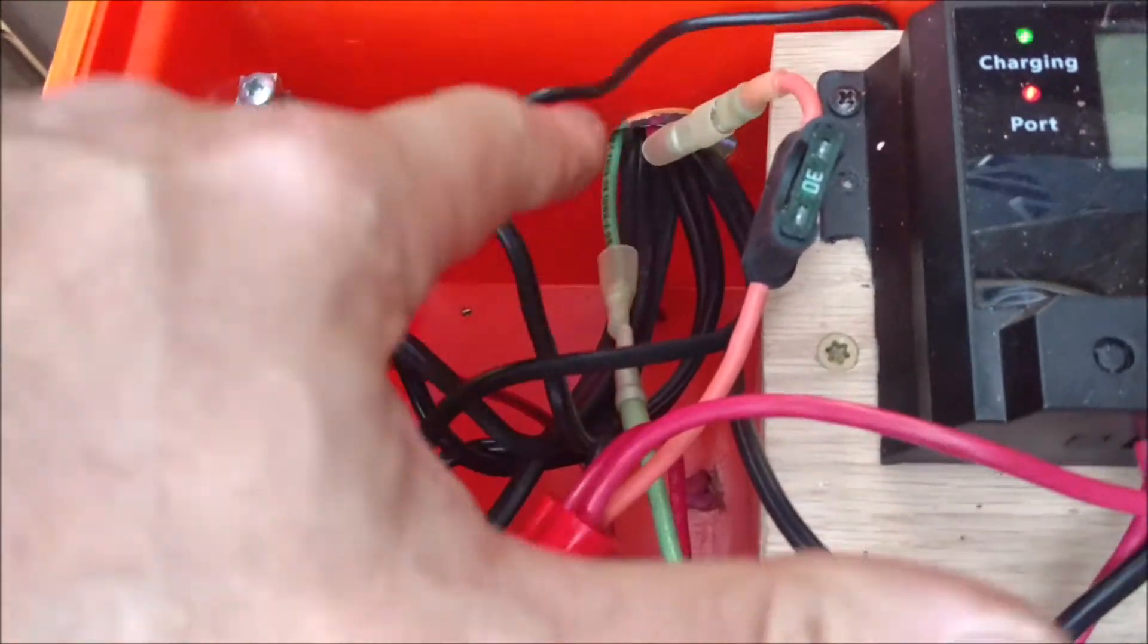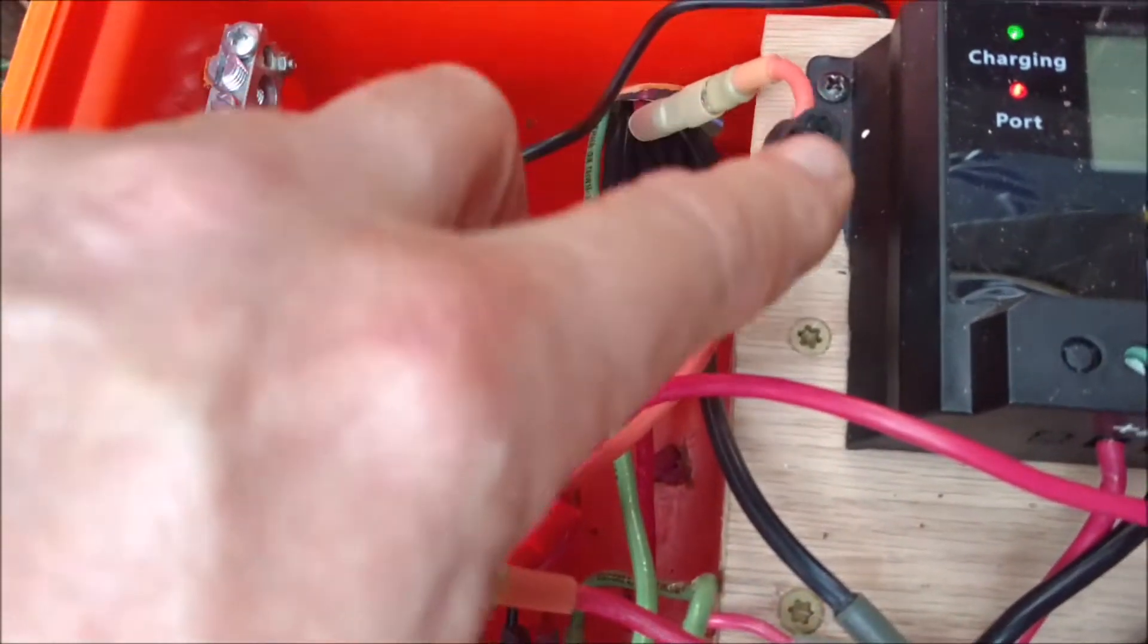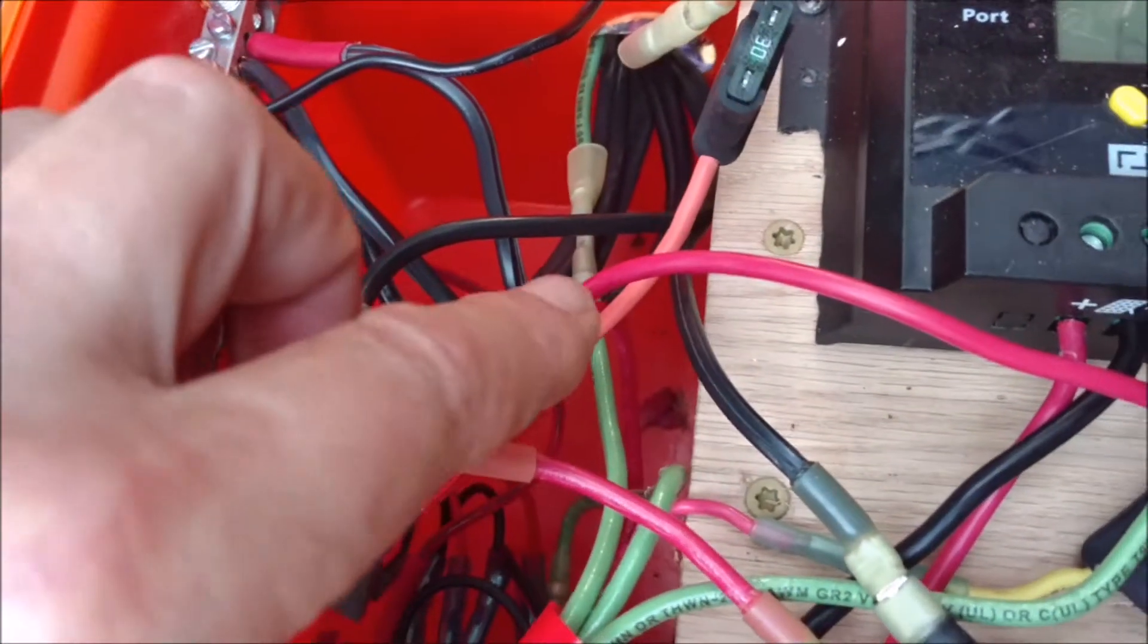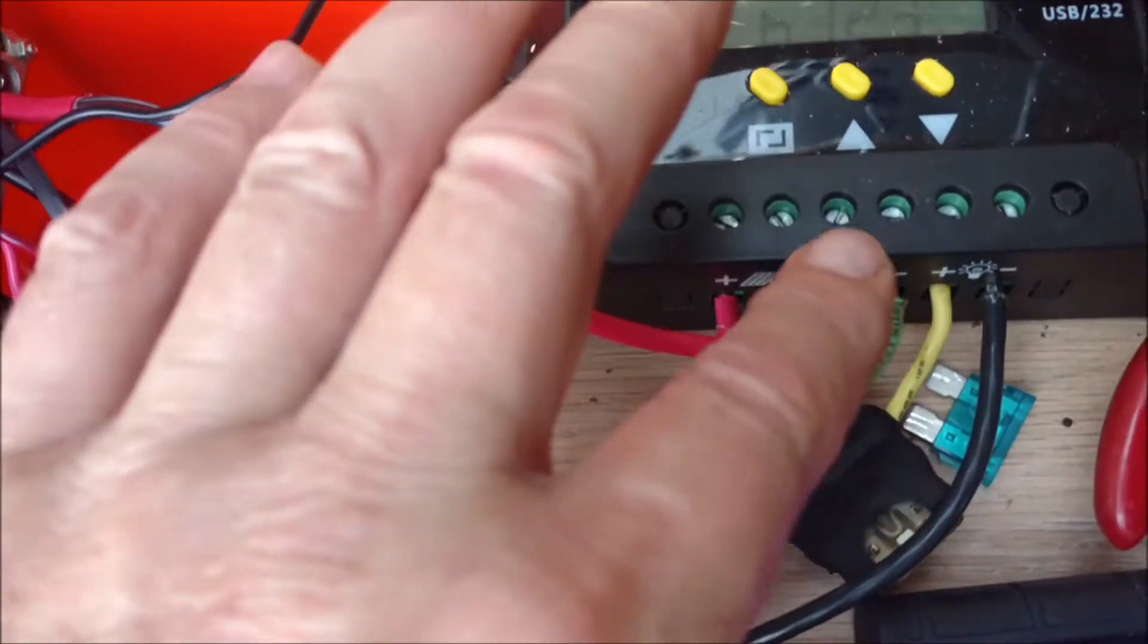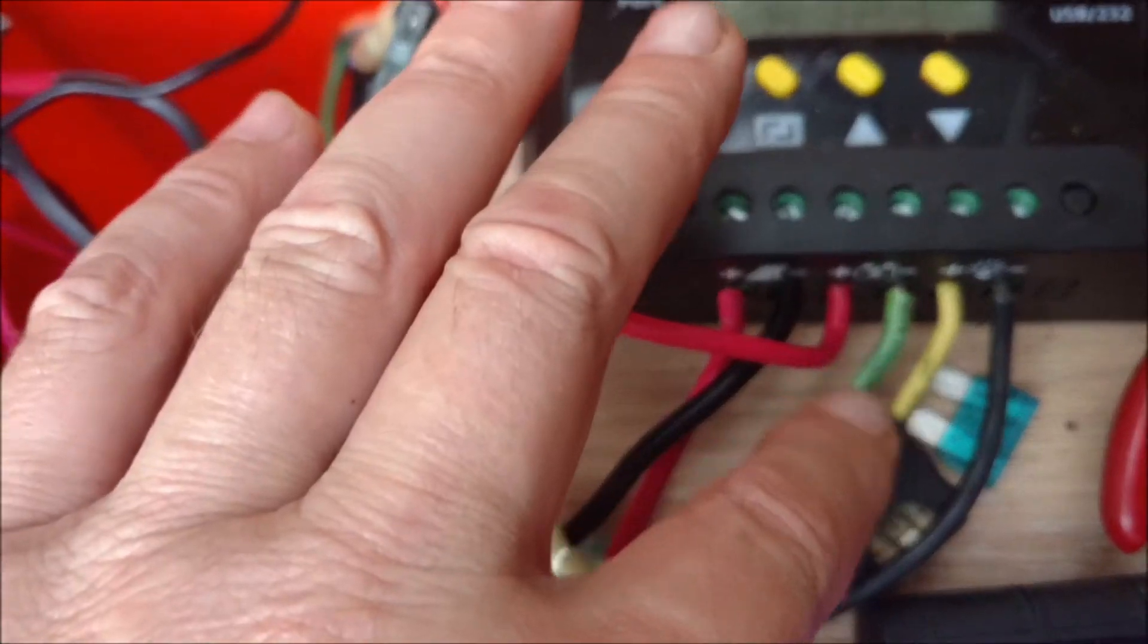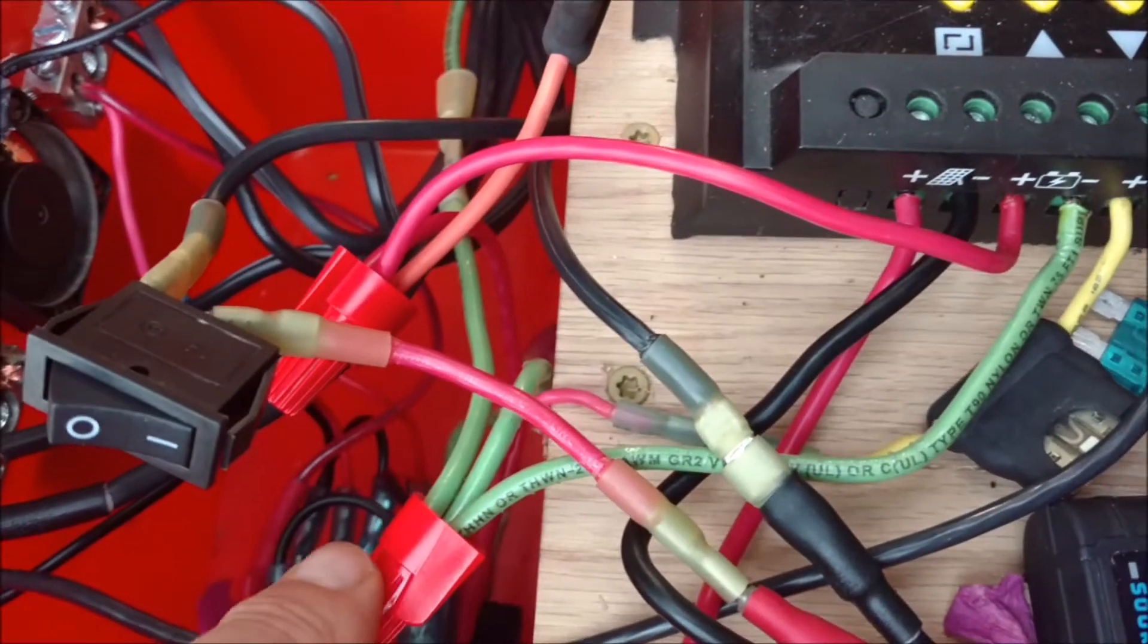And then quick disconnect there for the two wires that go to the battery, 30 amp fuse on the positive side and then goes right to the solar charger battery terminal inputs there. So good and safe.